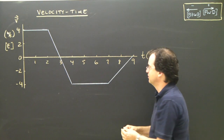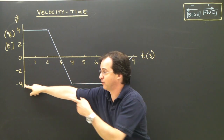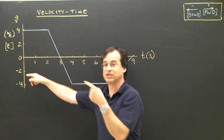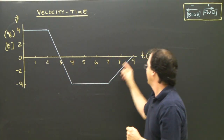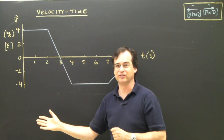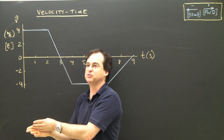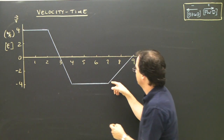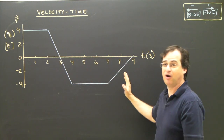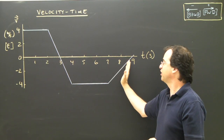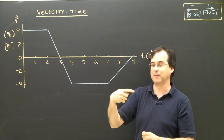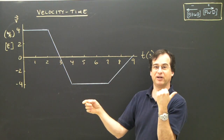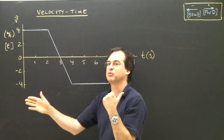In the last section, at seven seconds I'm running backwards at four meters per second. At eight seconds I'm running backwards at two meters per second. At nine seconds I'm not moving. So I was running backwards and getting slower. The slope here is positive, so my acceleration is positive — accelerating in the forward direction. Since I was running backwards and accelerating forward, I'm slowing down.